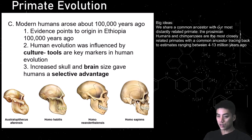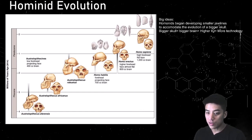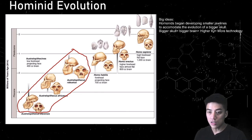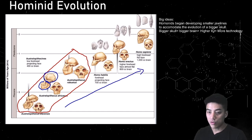Looking strictly at hominid evolution — not prosimians or chimpanzees or gorillas — you have your australopithecines dating back 2 to 3 million years ago. Notice the jaw size and the size of the skull: primitive hominids needed big jaws to gnaw at food, to chomp on vegetables and meat. But as time progresses, your modern Homo sapiens have big skulls and a small jawline.